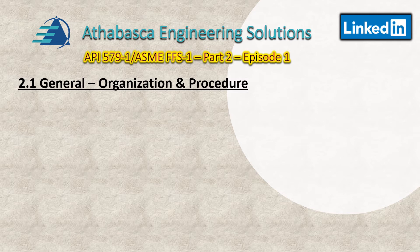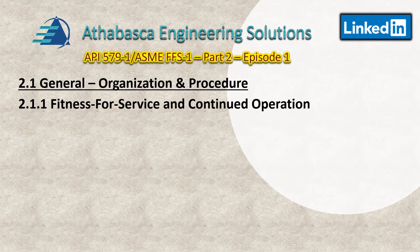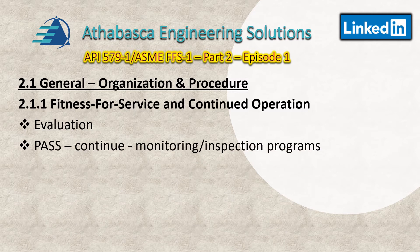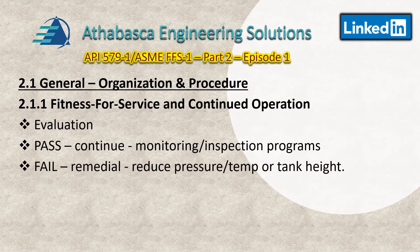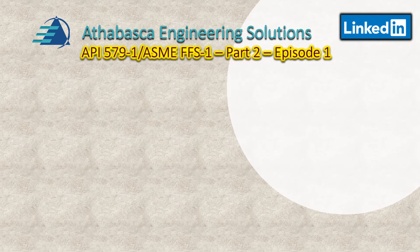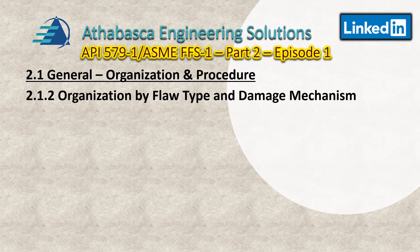Part Two's general notes serve as the roadmap for API 579. Some very general statements are made regarding fitness for service and continued operation. First, there are notes about evaluation — it's primarily intended for pressurized components containing flaws or damage. There's a brief discussion about when an evaluation passes, you are allowed to continue operation, provided monitoring and inspection programs are in place. It also talks briefly about failure and remedial action, such as reducing pressure, temperature, or liquid level in a tank.